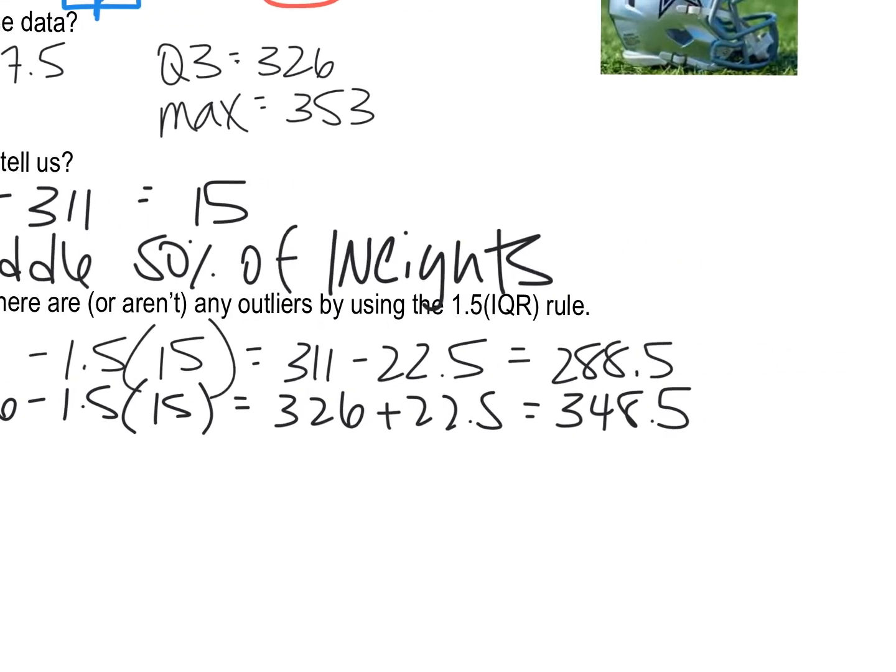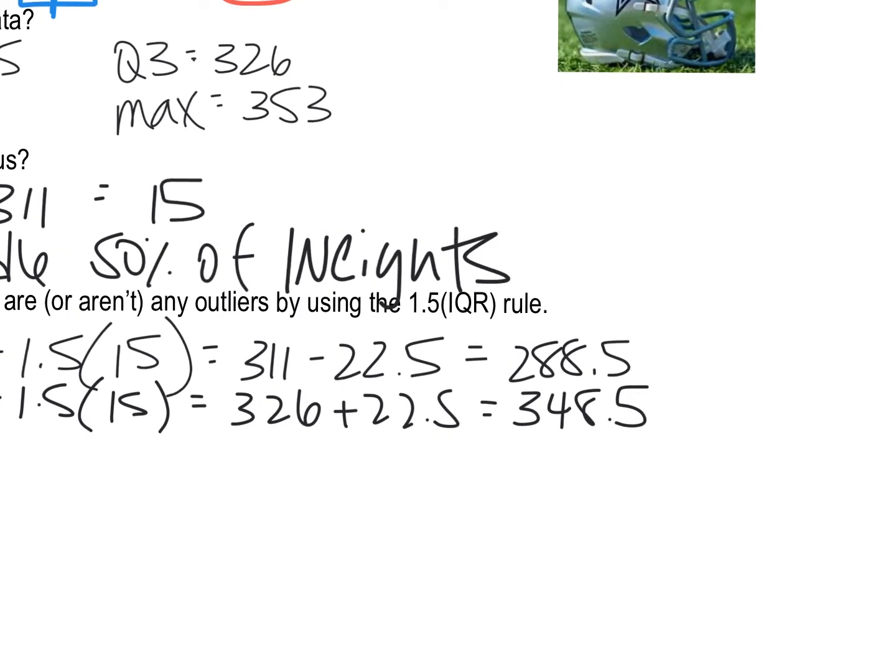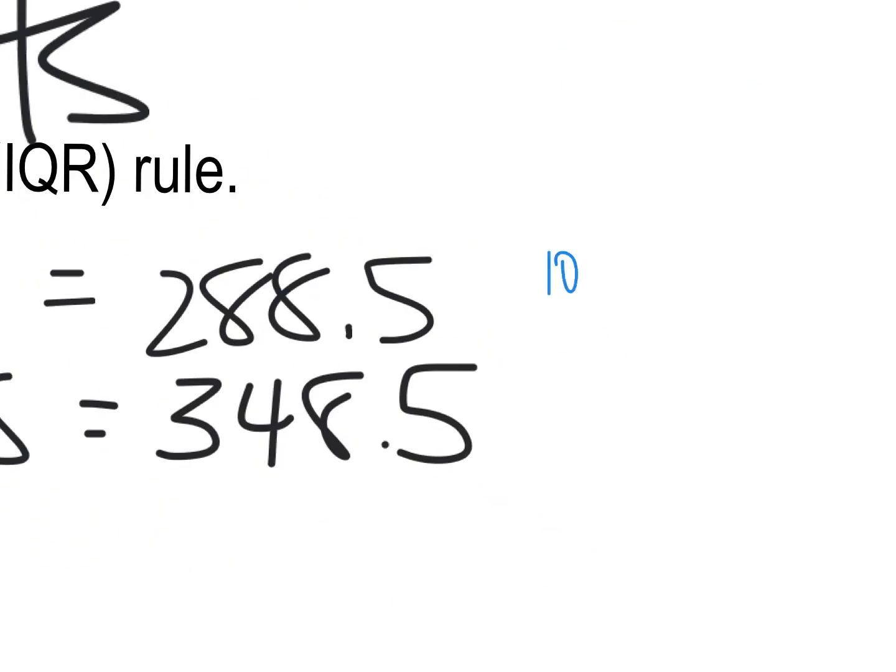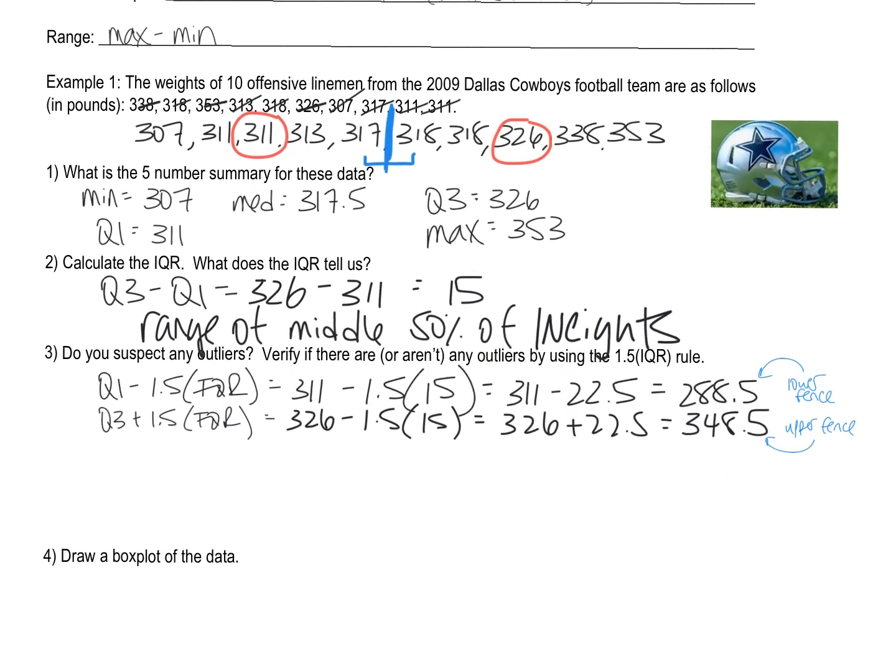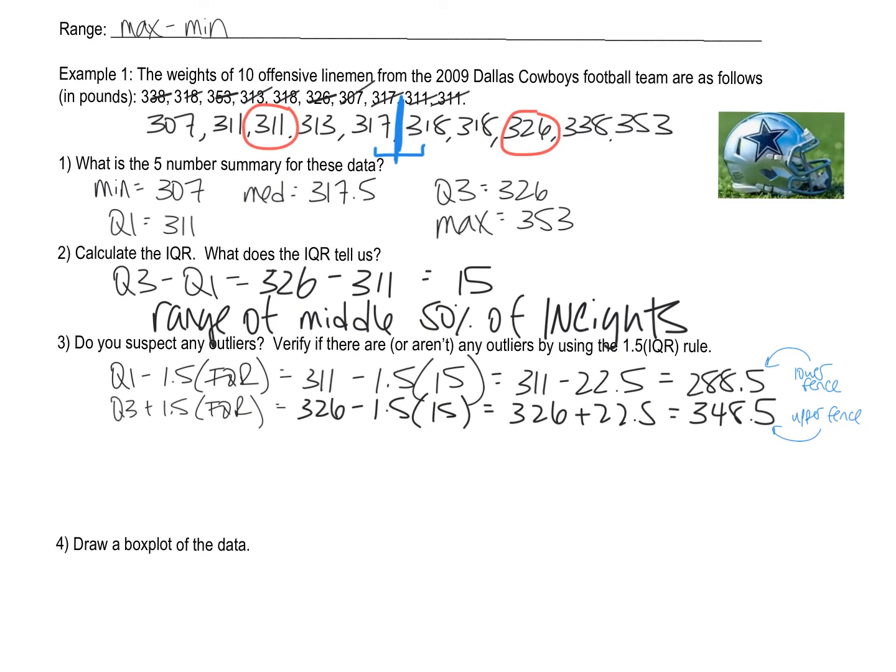And so this is going to be referred to as my upper fence and my lower fence. Kind of like I said earlier, so this is the lower fence, AKA the cutoff. And this is the upper fence, AKA the cutoff. And just so you know, these are the numbers that we are comparing to our list of weights of linemen up here, all these guys.